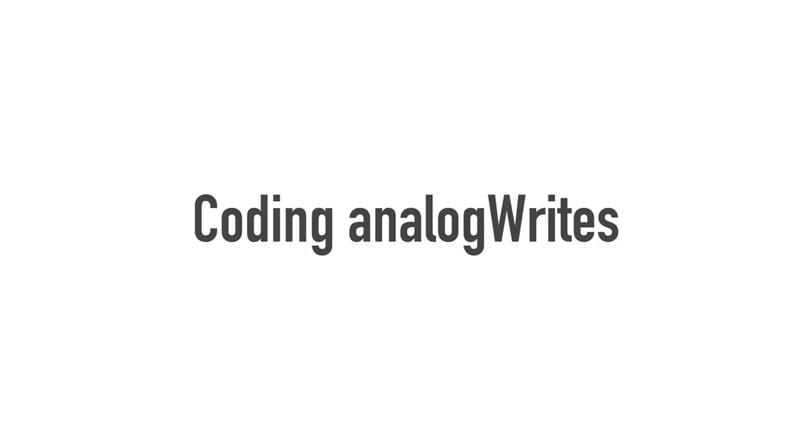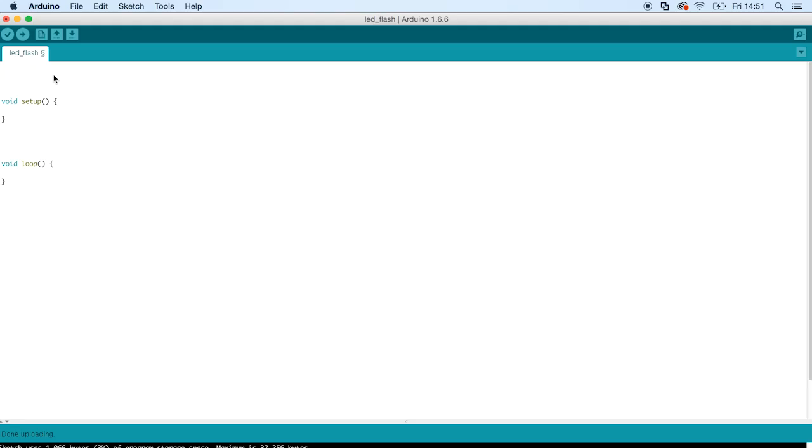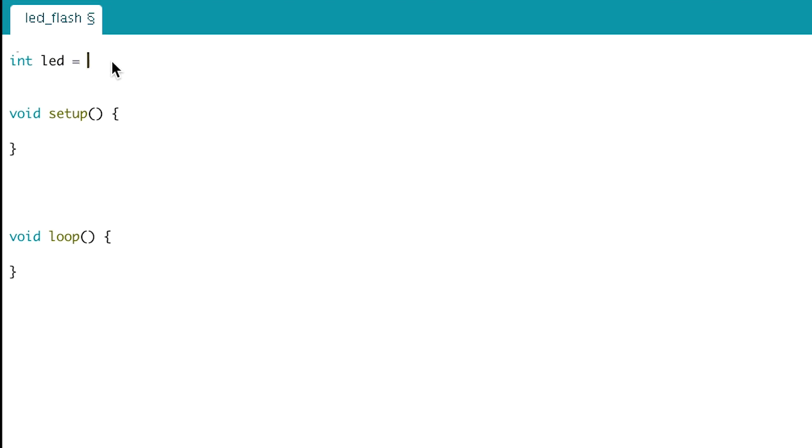So, setting up analog writes is super easy. It's mostly the same as digital writes. There's only a few small differences. So, first, let's set up our LED at the top. So, int LED equals 6 because we've got it wired to pin 6. Remember, the pin you use up here must be one of the PWM pins, which are marked on the Arduino board with a squiggle. Those pins are 3, 5, 6, 9, 10, and 11. So, this pin here has to be one of those.